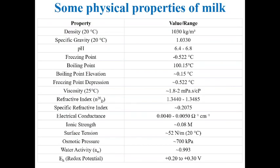Some key physical property values of milk: density at 20°C is approximately 1030 kg/m³; specific gravity at 25°C is 1.0330; pH ranges from 6.4 to 6.6; freezing point is −0.5 to −2°C; boiling point is 100.15°C; and boiling point elevation is +0.15°C, while freezing point depression is 0.5 to 2°C. These boiling point elevation and freezing point depression are colligative properties depending on the number of solute particles.